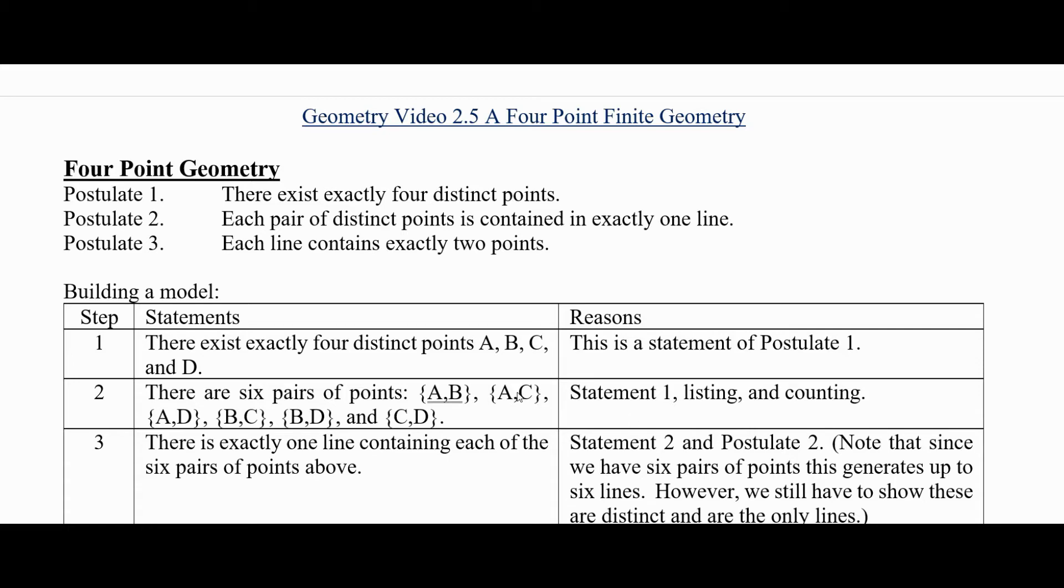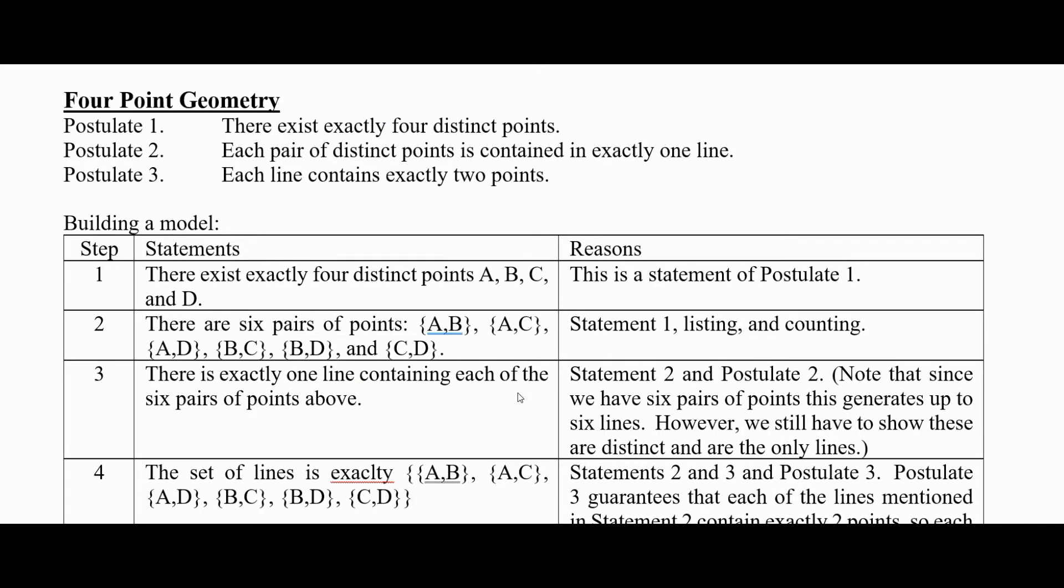So let's build up a model. Unlike most proofs when we're building a model we start with an existence postulate. There exists exactly four distinct points and let's give them names A, B, C, and D. This is a statement of postulate 1.